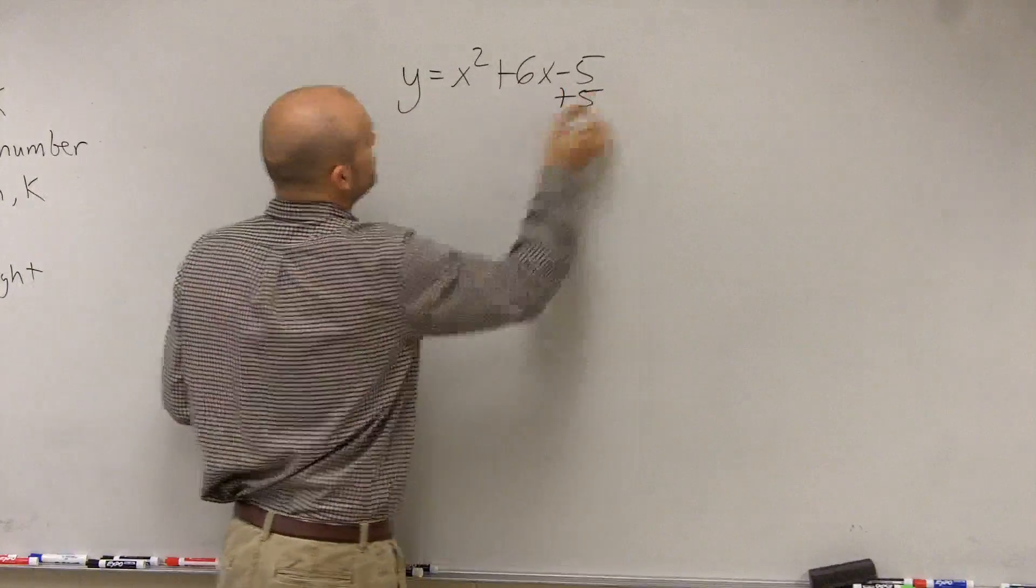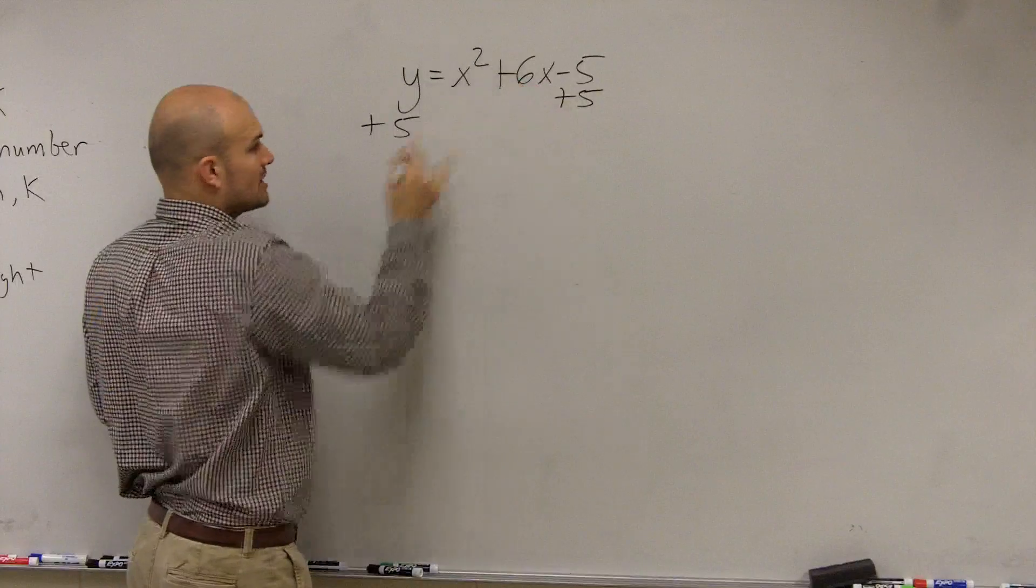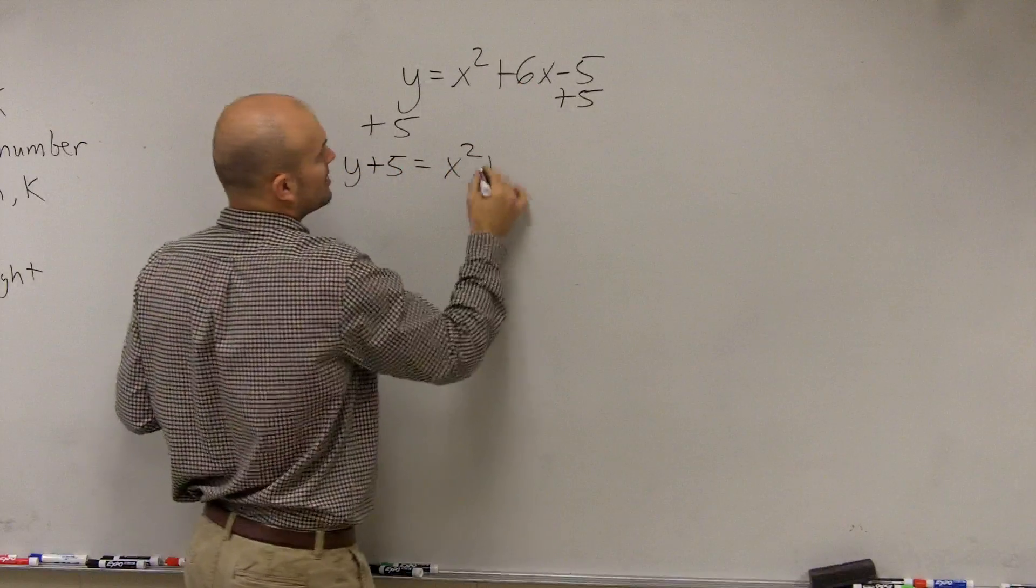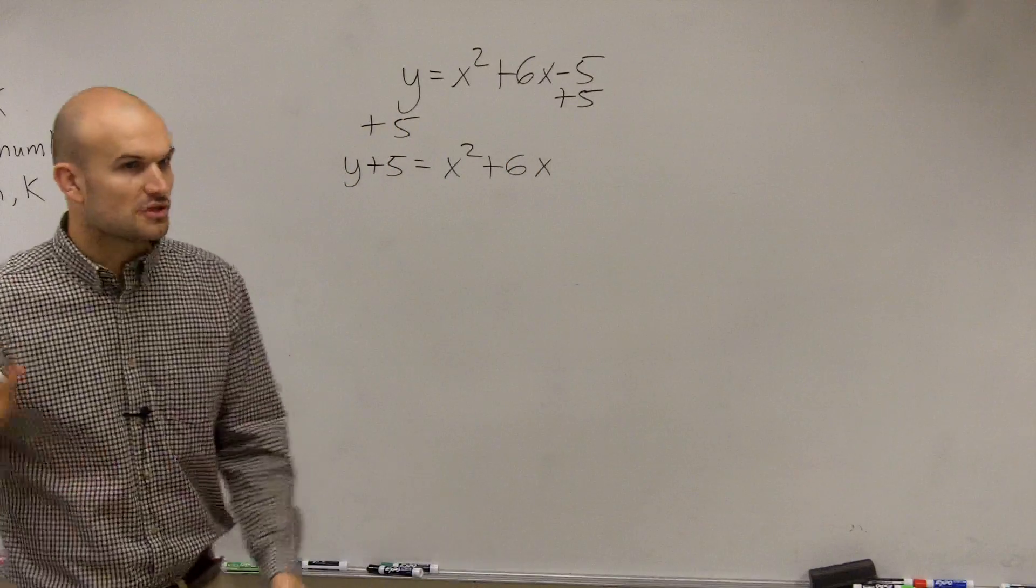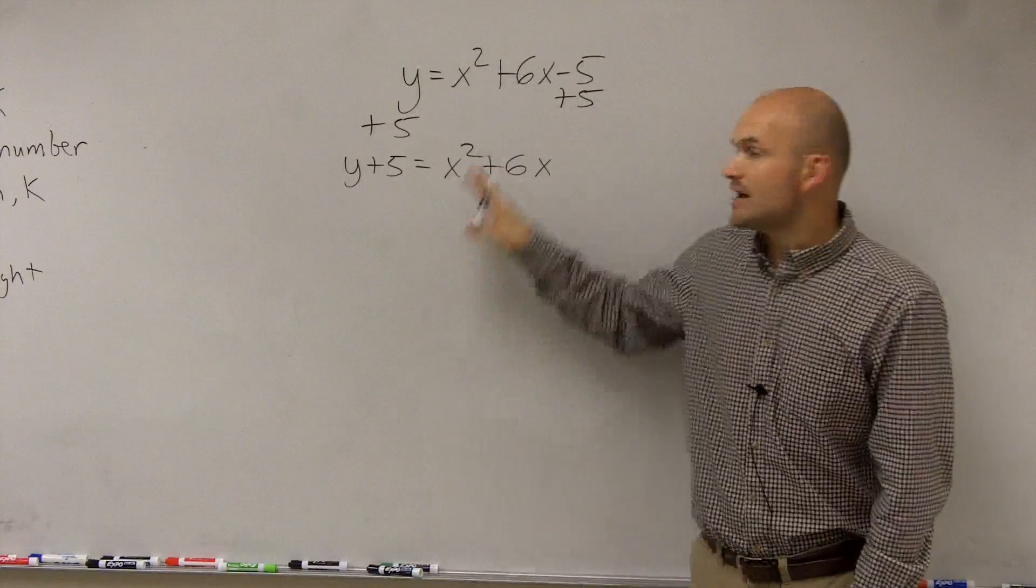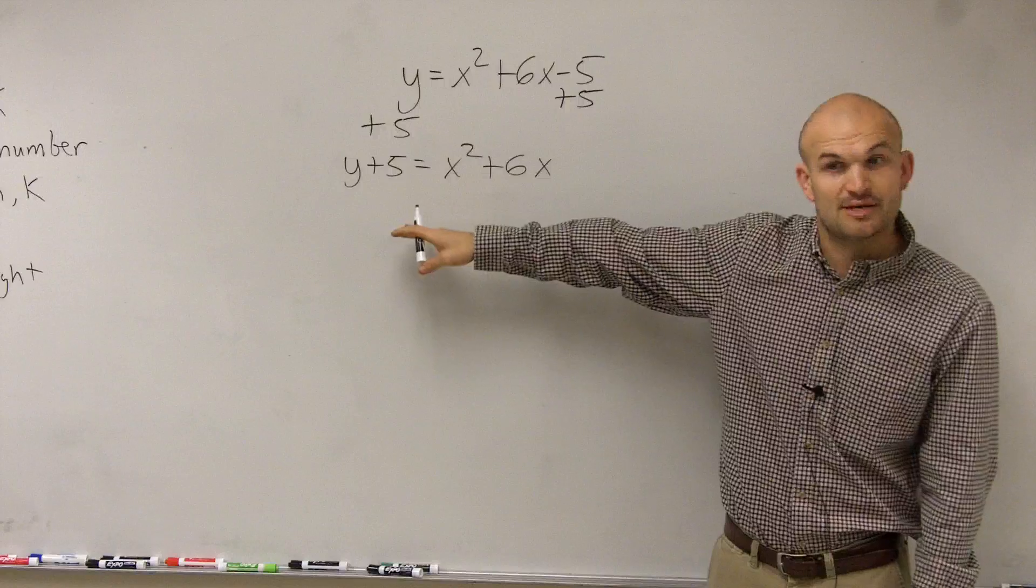So the first thing I always like to do, why make this harder than we have to, isolate what we're going to complete the square. So y plus 5 equals x squared plus 6x, right? So the same step applies. Isolate your variables that you're going to complete the square with. Now I know you have a y over here rather than 0, like we did before, but still, isolate what you're going to complete the square on.